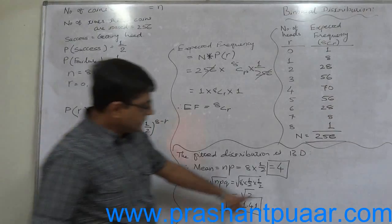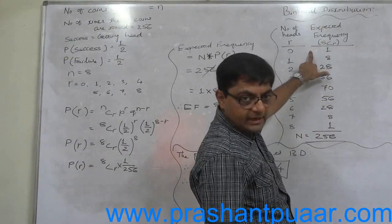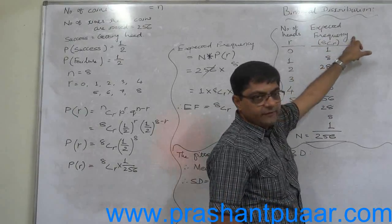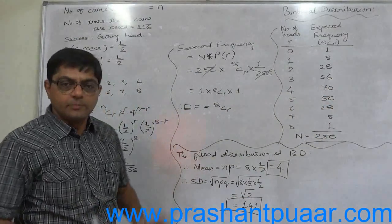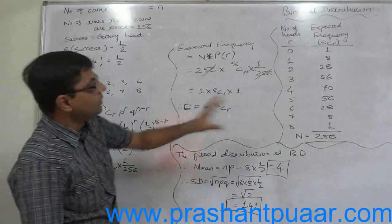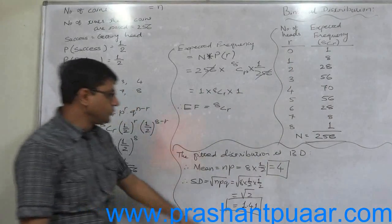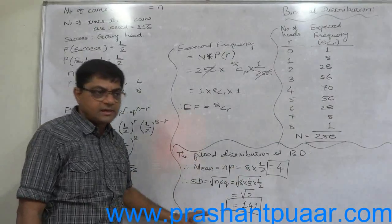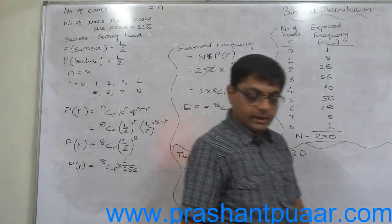We can verify these two answers through the longer process. We can calculate mean through these two columns. It is taken as x, it is taken as f, fx, fx square and so on. The same answers can be obtained. But the benefit is we know that this is binomial distribution. And in case of binomial distribution mean is always NP, variance is always NPQ, and standard deviation is always NPQ square root. Thank you.